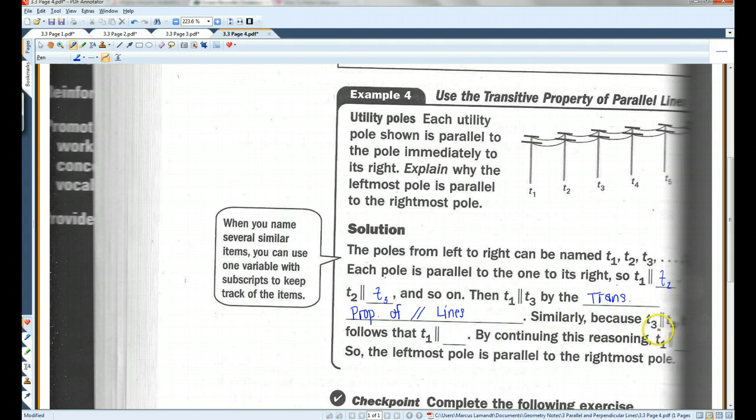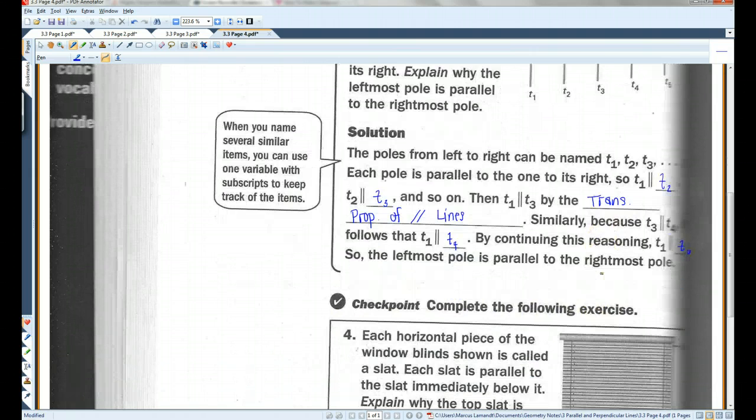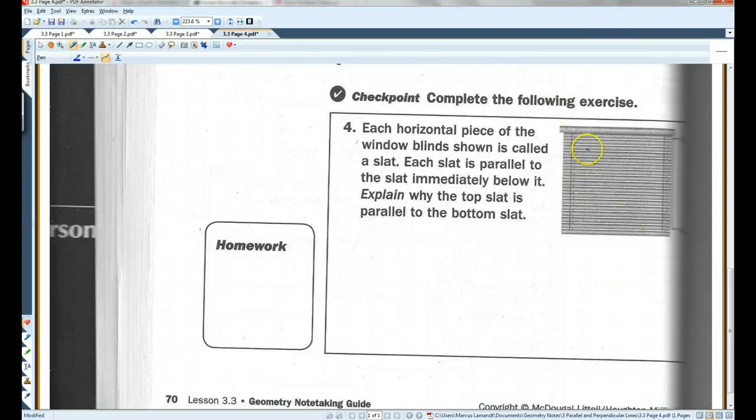Similarly, because T3 is parallel to T4, it follows that T1 is parallel to T4. By continuing this reasoning, T1 is parallel to T6, so the leftmost pole is parallel to the rightmost pole. Alright, I'll let you guys do this one. And that's it for today.